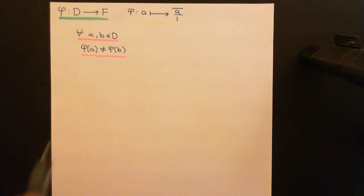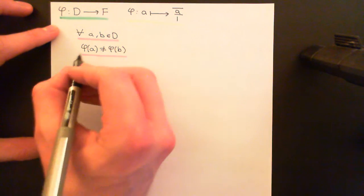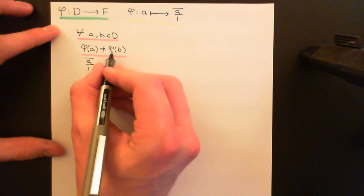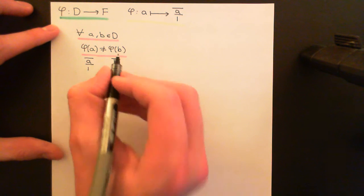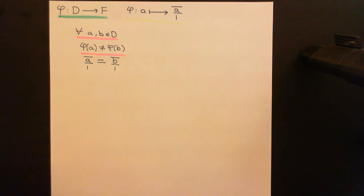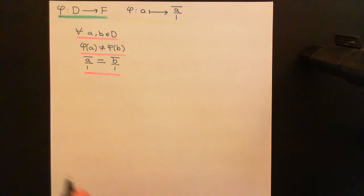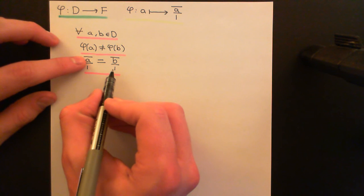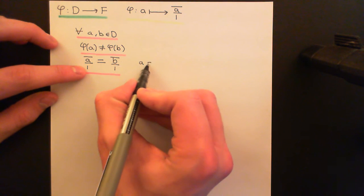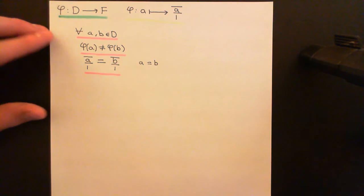Let's do this by proof by contradiction. Suppose instead that φ(A) equals φ(B). We know that φ(A) is the equivalence class of fractions containing A over 1, and φ(B) is the equivalence class containing B over 1. We're assuming these two equivalence classes are equal, which means the two fractions are equivalent — they obey that relation. Taking the numerator of one multiplied by the denominator of the other gives A, and vice versa gives B, so this would mean A equals B. But we assumed A and B were distinct elements — they were not equal to one another.